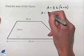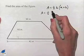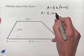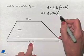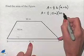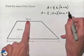Area is going to equal one-half times the height, which is 15 inches, multiplied times the sum, where we're going to take a base of 40 inches and add to it the other base of 30 inches.